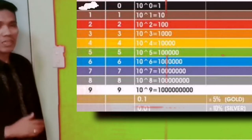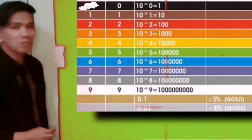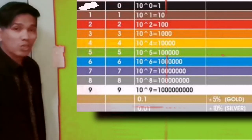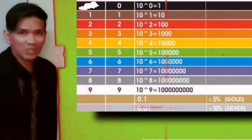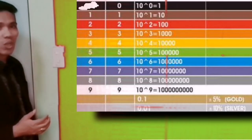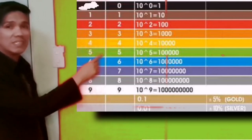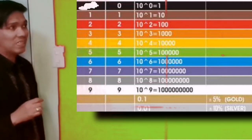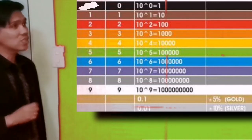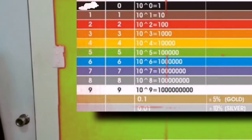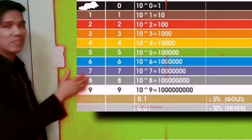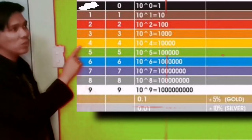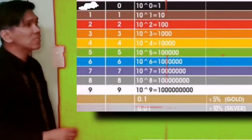If red is used in the first or second digit, its value is 2. If red is used in the third digit or multiplier, its value is 100. Next, orange — if orange is used in the first or second digit, its value is 3. If yellow is used in the first or second digit, its value is 4. If yellow is used in the third digit or multiplier, its value is 10,000.